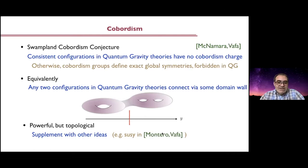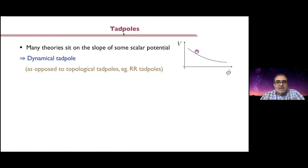In this talk I will discuss the cobordism conjecture connected with another ingredient: dynamical tadpoles. Tadpoles here are not in the sense of Ramond-Ramond tadpoles or the tadpole conjecture discussed in other talks in this workshop. What I mean by dynamical tadpoles are tadpoles for dynamical fields. As soon as you have some theory sitting on the slope of some scalar potential — not at the minimum but on the slope — you will have one of these dynamical tadpoles, meaning a one-point function in the vacuum for some dynamical field.